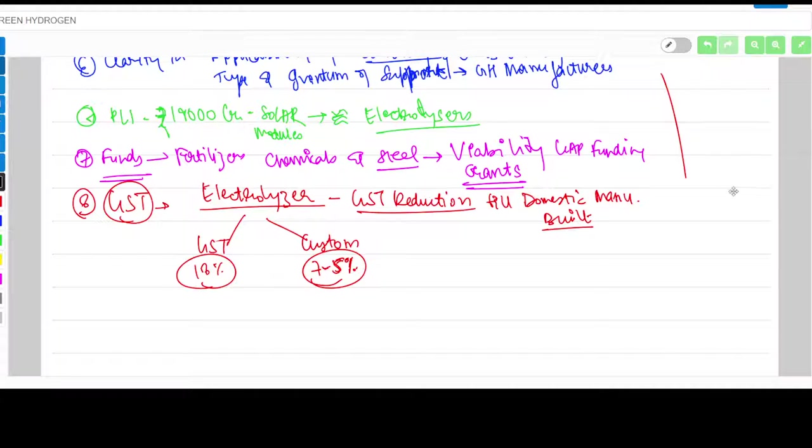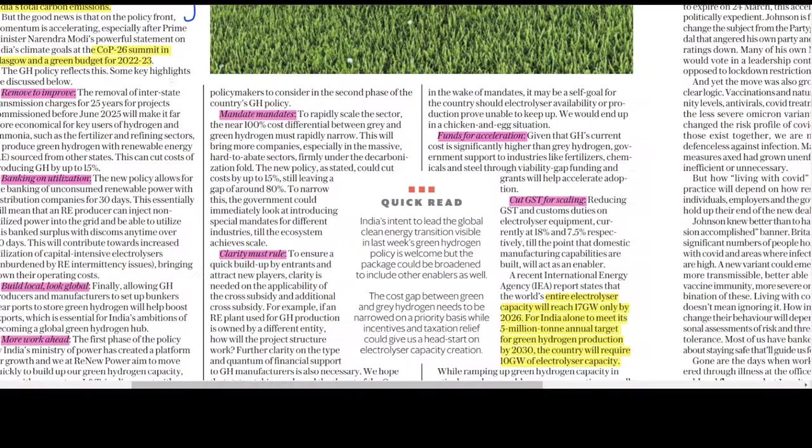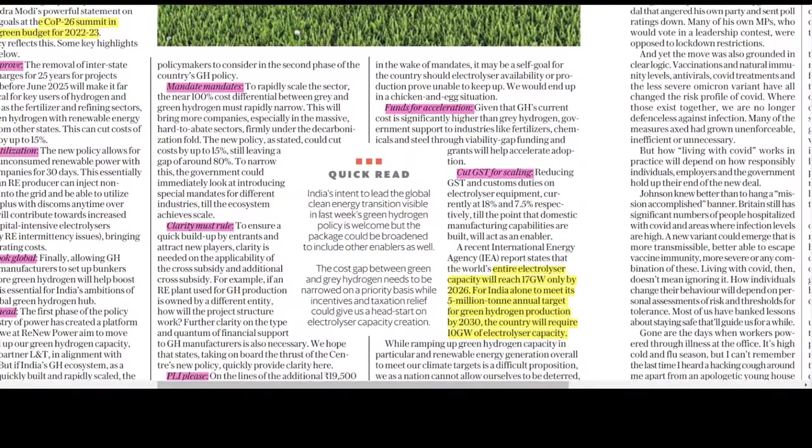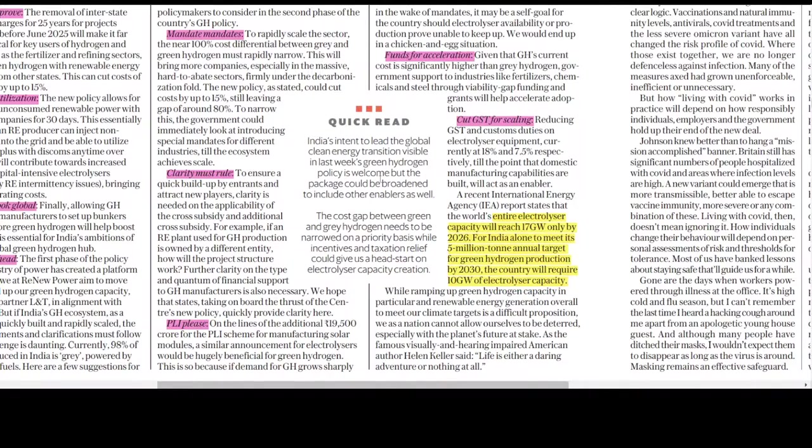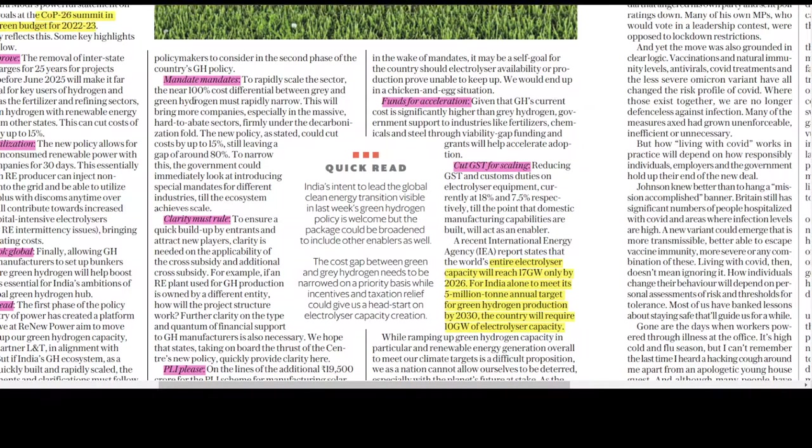The last point is that currently electrolyzer has 18% GST and custom duty. He's saying this should be reduced, which will be highly beneficial to domestic manufacturers wanting to set up green hydrogen production. So the article discussed funds, GST cutting, PLI, clarity on subsidies, and mandate that 100% cost differential between green and gray hydrogen must rapidly narrow.